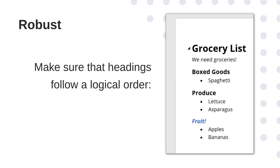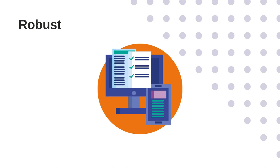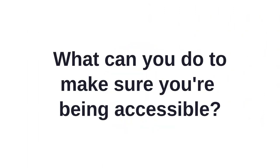For headings, you should use the heading tool built into your word processor to mark where headings are, but you also want to make sure that the headings follow a logical order. If I have a grocery list and the title 'Grocery List' is a Heading 1, the section for produce should be a Heading 2, and the section for fruits should be a Heading 3 under that. If I want to communicate that a heading is of the same level as another — like boxed goods in contrast to produce — I would set boxed goods to Heading 2 as well. Robust is really about doing what we said in the other sections and doing it well, so when you're thinking about making your content accessible in a robust way, remember you can get help. Now that we've gone over the four sections of POUR, what can you do to make sure you're being accessible with your projects?